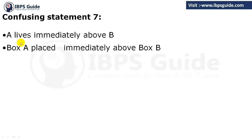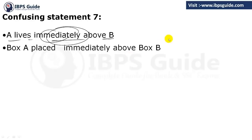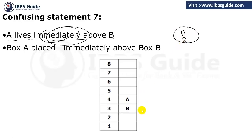The seventh statement: A lives immediately above B. The word 'immediately' places the value of A directly above B. If B is here, then on the immediate above it will be A. There cannot be any other floor in between. Immediately above means just above — if B is here, then A must be right here.